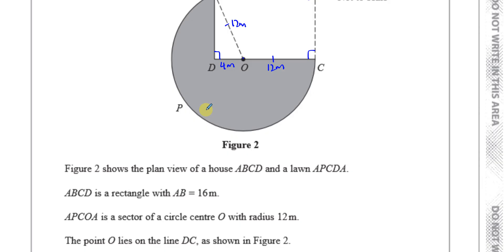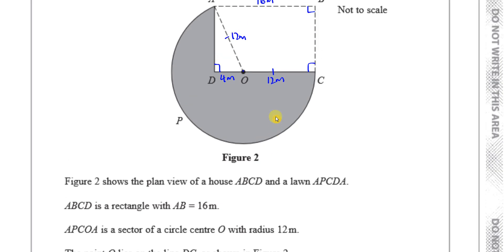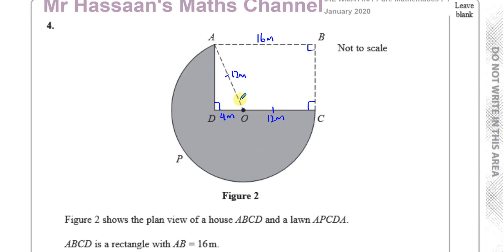The point O lies on DC. Show that the size of angle AOD is 1.231 radians to three decimal places. I'm going to call it angle X. We have enough information already — we have a right angle triangle, and we have the hypotenuse and the adjacent side, so we can use cosine.